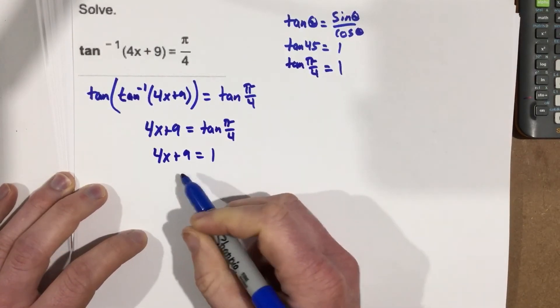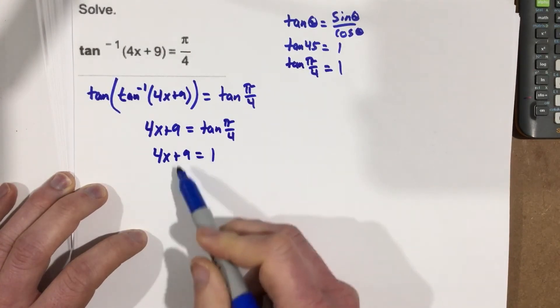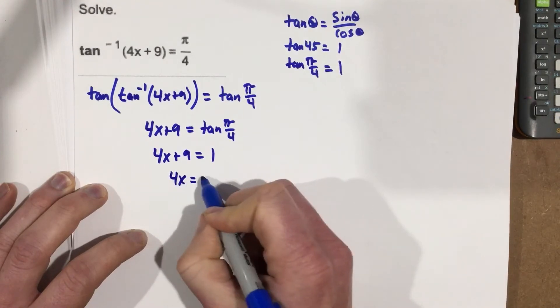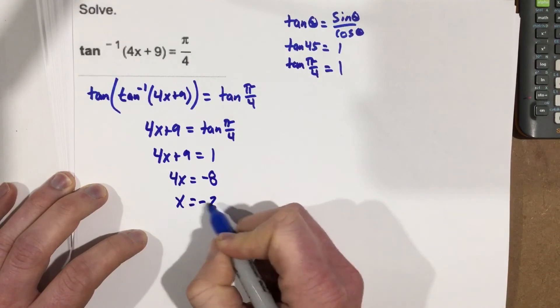At this point, this makes it really easy. So the only thing I had to do was take tangent on each side, and that got me to a really easy problem to solve. Subtract the 9, 4x equals negative 8. Divide by 4, I get x equals negative 2.